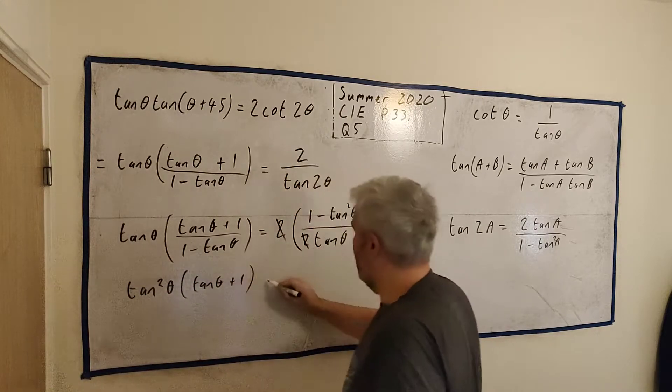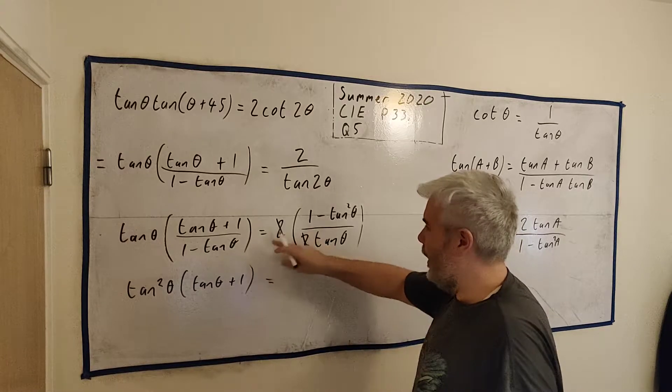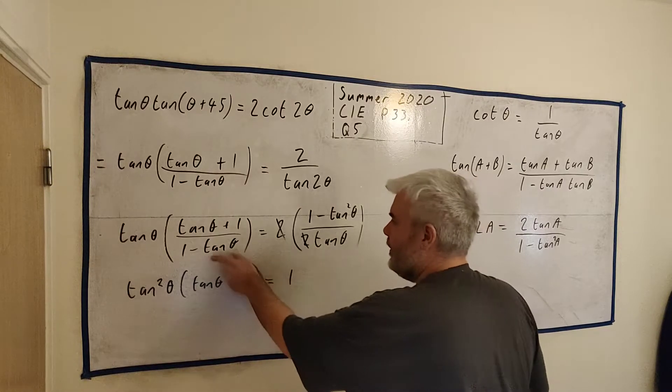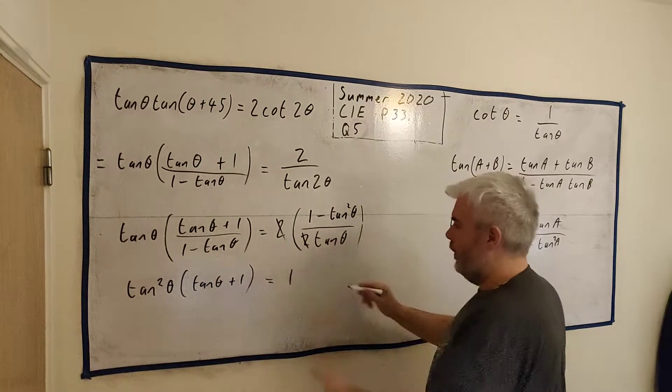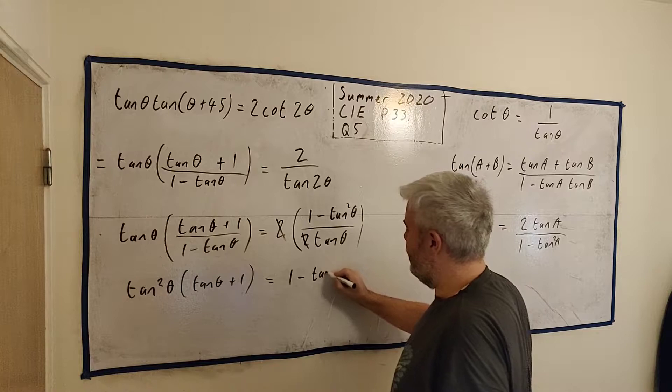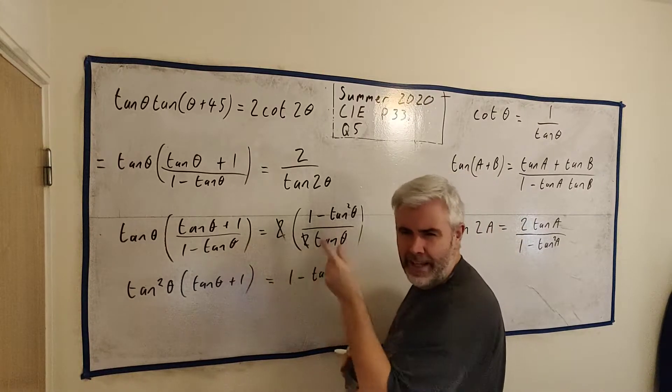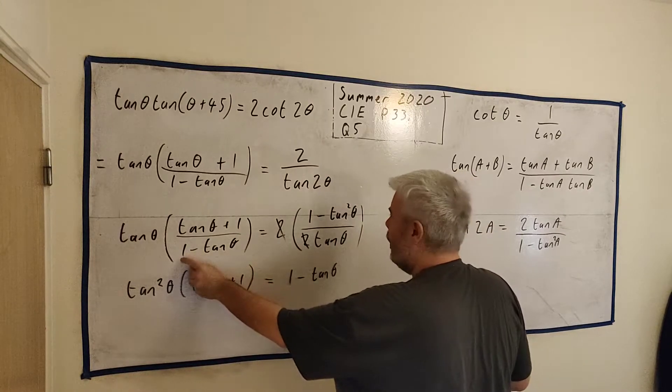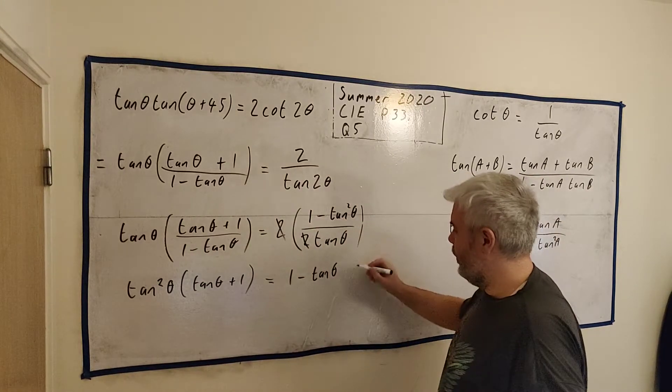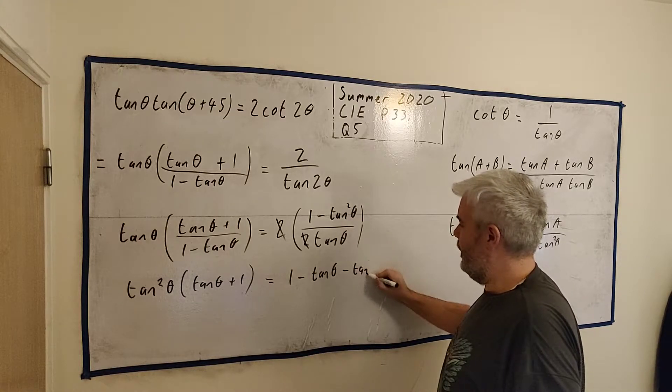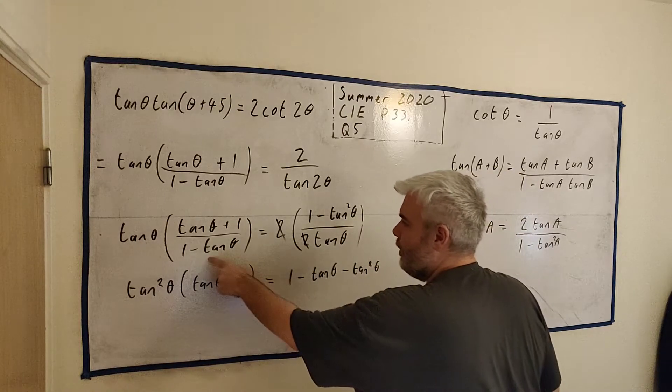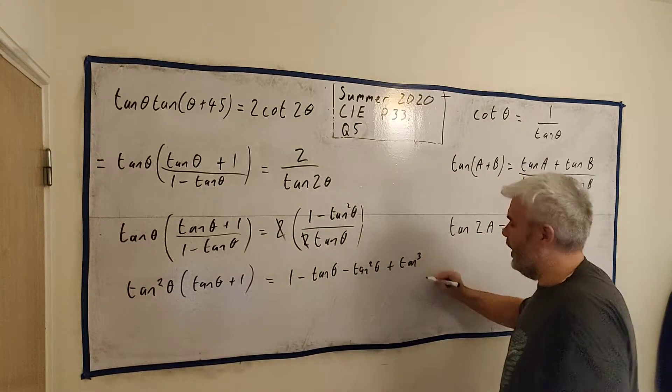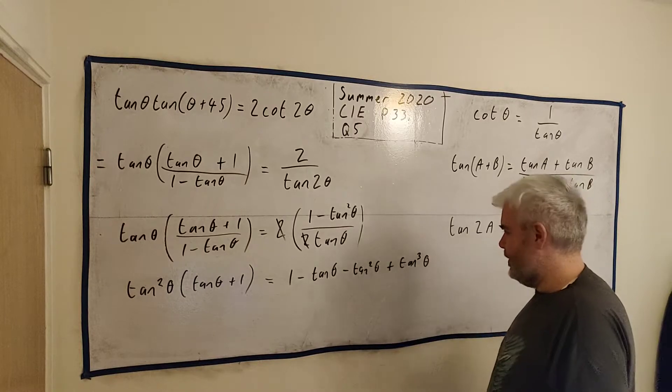so this side will get tangent tan θ squared multiplied by tan θ plus one and that's equal to this multiplied by this let's do that now one by one is one tan θ by one is minus tan θ I'm just looking for all the tans all the tan squares and all the tan cubes